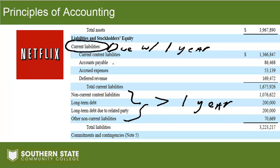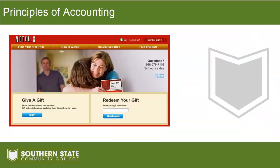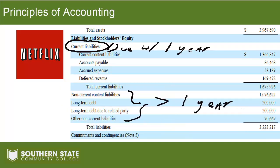Accrued expenses are also most of the time going to be current liabilities — those are amounts owed to employees for wages, fringe benefits, and things like that. The last one might be a little new to you: deferred revenue, also known as unearned revenue. That's when Netflix makes a sale and collects cash but hasn't delivered the service yet. Netflix sells a lot of gift subscriptions and people may not sign up for a few months after receiving them, so Netflix has taken someone's money but hasn't delivered the service — that's a deferred or unearned revenue, and it's included in current liabilities.